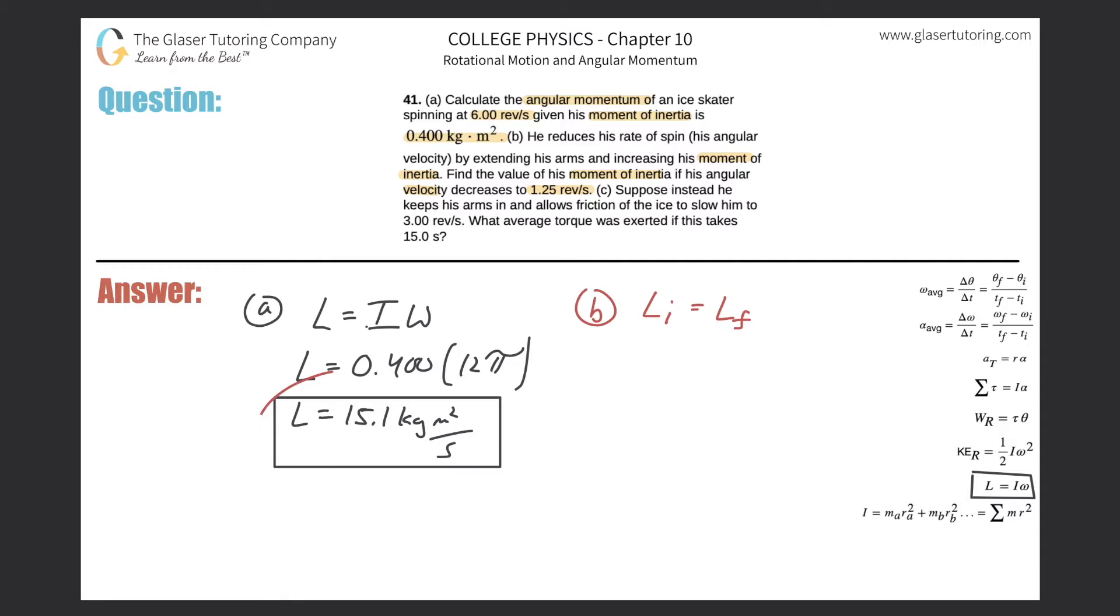Now, the start is what we just calculated in part A. So we already know this initial angular momentum. That's going to be the 0.4 multiplied by 12π. You can also write in there if you wanted the 15.1, that's fine too. And now the final value of the angular momentum is going to be, we can now break that up into the final moment of inertia and the final angular velocity. Now, they told us the angular velocity is 1.25 revolutions per second.